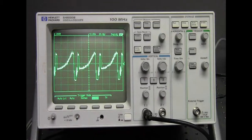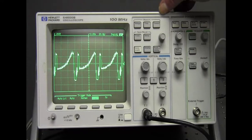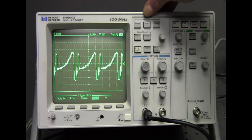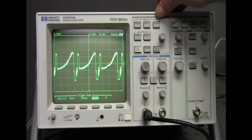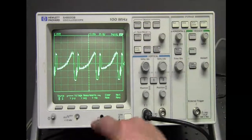Now we need to take some measurements off of it. Up at the top it says measure. We can measure voltage, time, and we can adjust the cursor. If I hit voltage, we have three different voltage measurements.